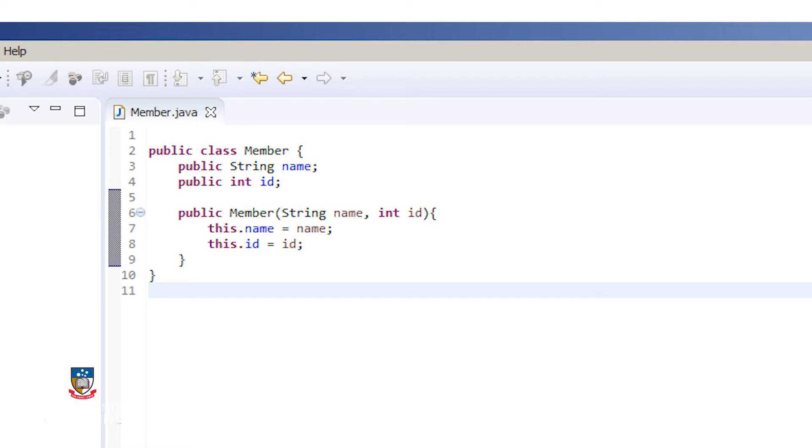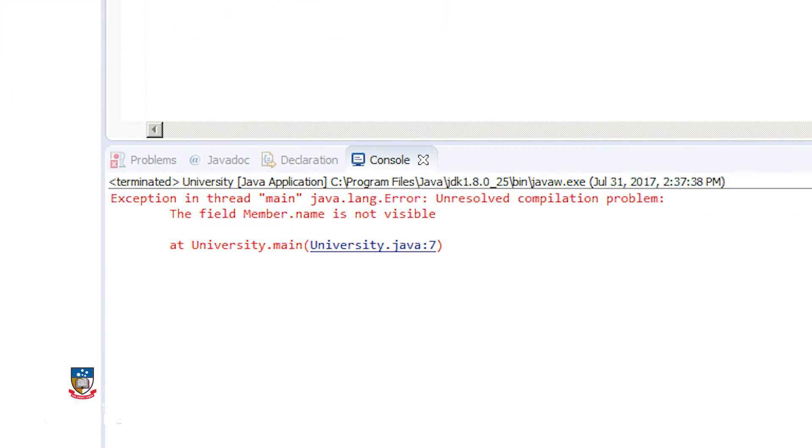If something has private visibility, it is unusable outside of its class. A subclass will not inherit private members of its superclass. If I change the name variable in member to be private, like so, then my program no longer works.